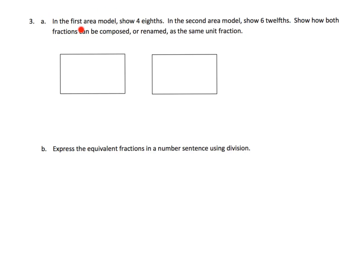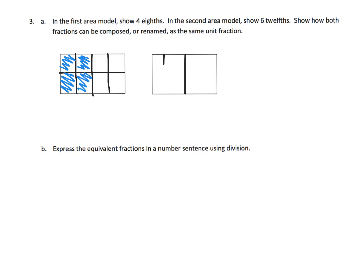Here it says: in the first area model show four-eighths, in the second area model show six-twelfths, then show how both fractions can be composed or renamed as the same unit fraction. For four-eighths, we cut it into fourths and then cut it in half — there are our four-eighths: one, two, three, four. Over here for six-twelfths, we start by cutting it into sixths, then cut it this way again. If we shade in six-twelfths, it looks like this: one, two, three, four, five, six.